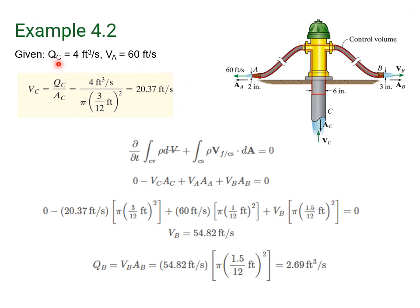In this problem, we're given the volume flow rate at C — it's 4 cubic feet per second. We're given the velocity at A, which is 60 feet per second. So we can calculate the velocity at C: it's simply Q at C divided by the area at C. Since the diameter is 6 inches, that's a 3-inch radius. Taking the Q value divided by pi R squared, we get 20.37 feet per second.